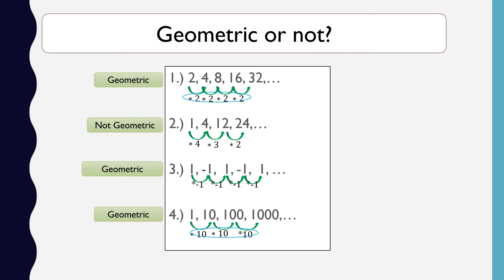For the geometric items, we can write their common ratio. The common ratio is the number being multiplied to each term of a geometric sequence. For those who have difficulty finding R, there is a formula: R is equal to a sub 2 divided by a sub 1 — the second term divided by the first term.